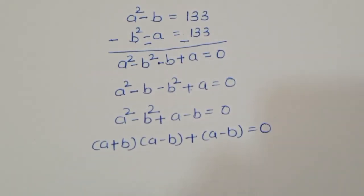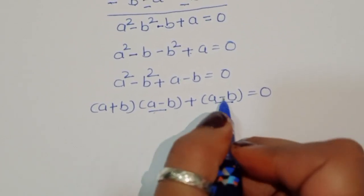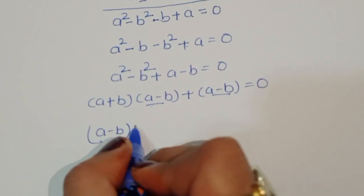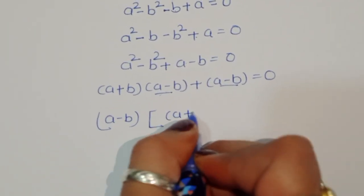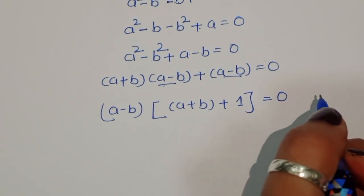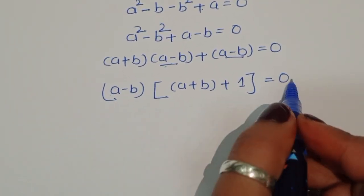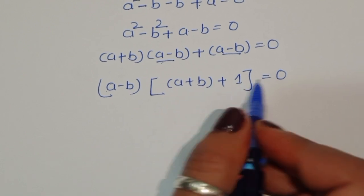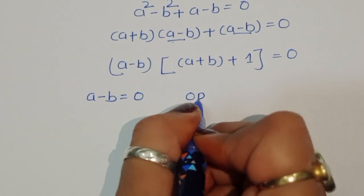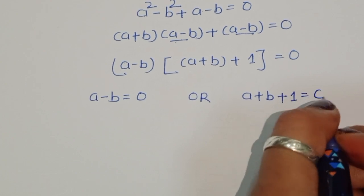You can see (a-b) appears in both terms, so we take (a-b) as common. Taking (a-b) common, the left term becomes (a+b+1), giving us (a-b)(a+b+1) = 0. From this we get two equations: first, a minus b = 0, and second, a plus b plus 1 = 0.